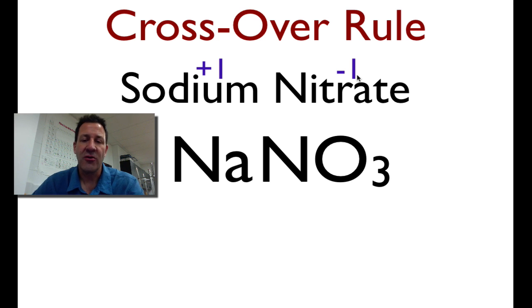Therefore, I know that the formula is just going to be 1 to 1. Even if this was 2 and 2, or plus 3 and minus 3, or plus 4 and minus 4, we know that this formula is going to reduce to its lowest ratio, which is 1 to 1. So we just write down sodium and nitrate. That one's pretty easy.